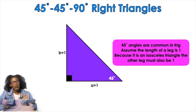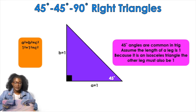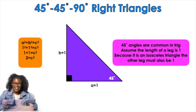So a equals one and b equals one — both legs of the triangle are equal to one. That just leaves us to figure out the hypotenuse using the Pythagorean theorem. We do one squared plus one squared equals c squared, which gives us 2 equals c squared. Taking the square root of both sides, c equals the square root of two.